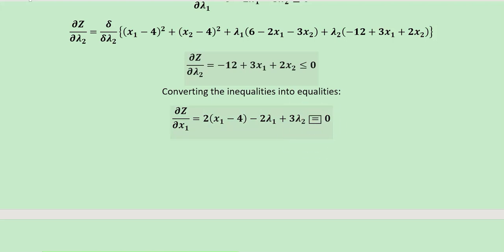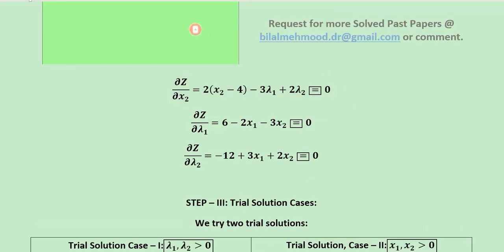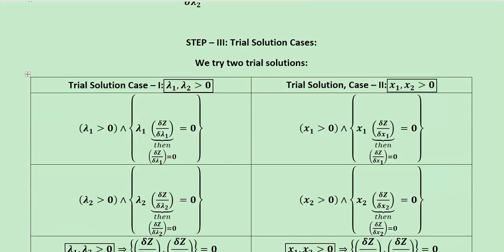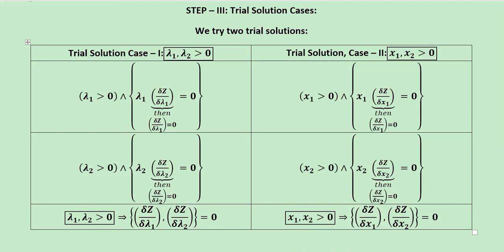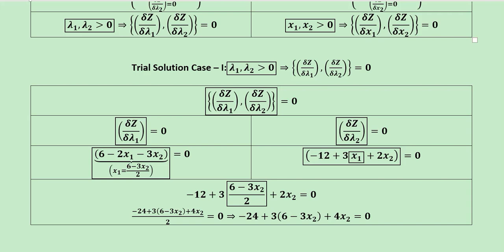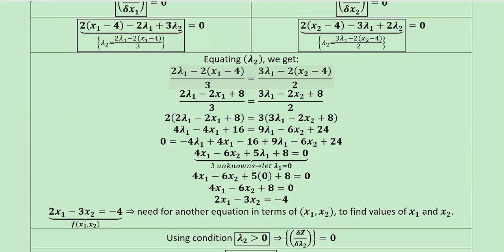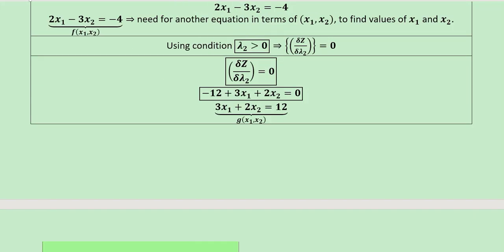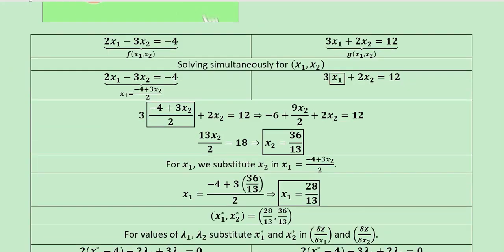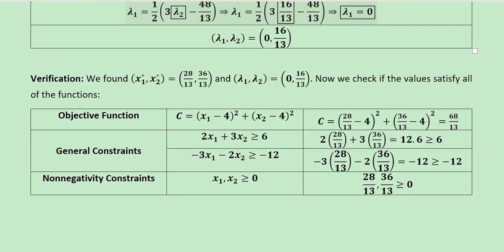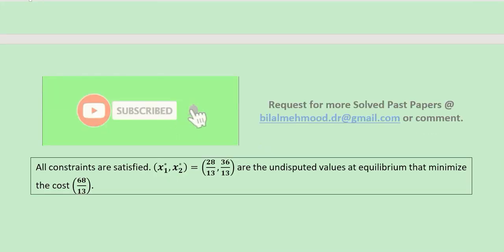All four variable and multiplier-based conditions have been converted into equalities. Trial solutions are also listed here — these are not part of the question requirement, but you can refer to the nonlinear programming video on the same channel for description. After verification, we are assured that these are the undisputed equilibrium values for this given situation, and in this way the whole question paper is solved.